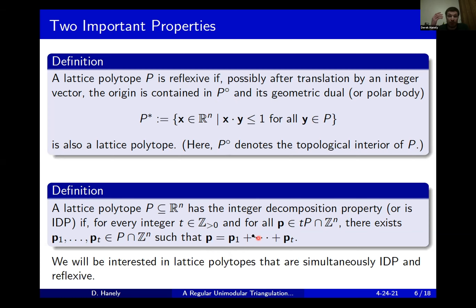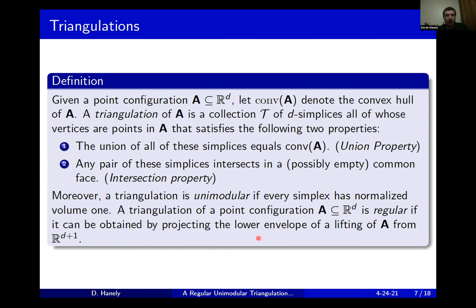For the sake of this talk, we're going to be interested in the case where we simultaneously satisfy both IDP and reflexivity. The last bit of background we need before introducing our object of interest is the notion of what it means to triangulate a point configuration. A point configuration could be the set of vertices of the polytope, or more generally the polytope's vertices plus all its interior lattice points — any lattice point contained on the inside. In general, a point configuration could be any convex set of points, which would of course define a polytope.